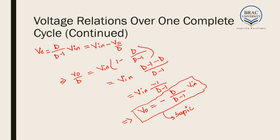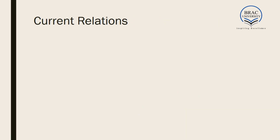The Zeta converter can step up and increase the output voltage when D is greater than 0.5, and it can step down or decrease the output voltage when D is less than 0.5. The voltage of the input will have the same polarity as the voltage of the output.